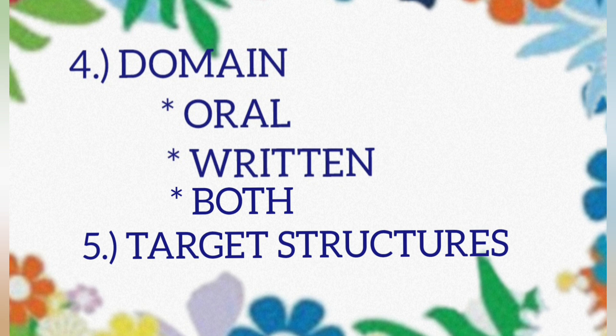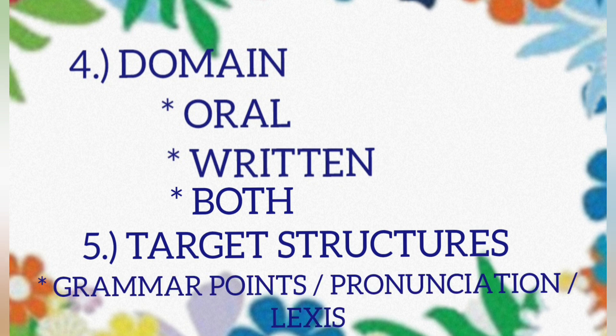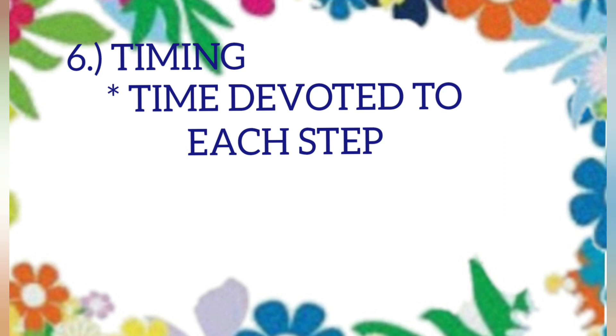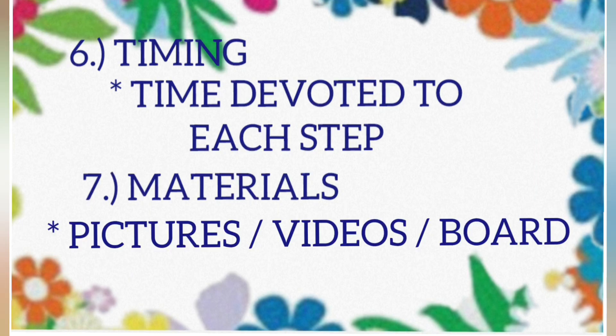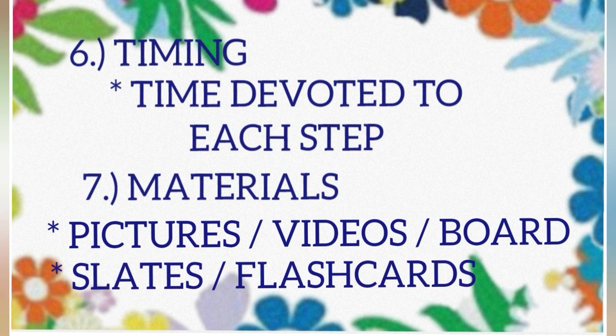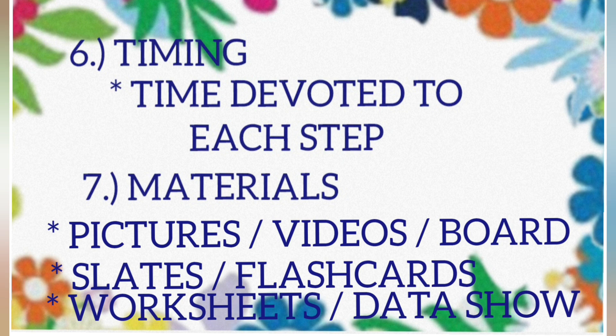Number five: the target structures — the grammar points, pronunciation, and lexis. Number six: the timing — the time devoted to each step. Number seven: the materials — which includes pictures, videos, board, slates, flashcards, worksheets, and data show.